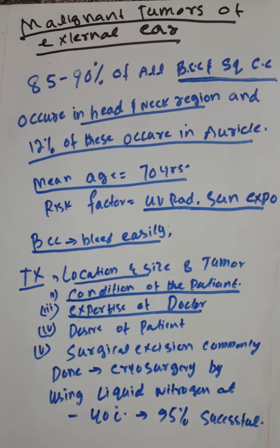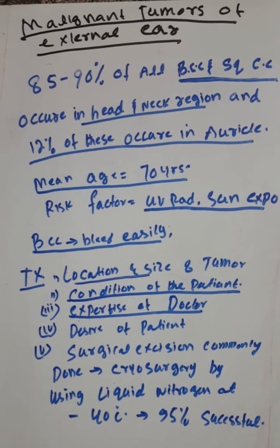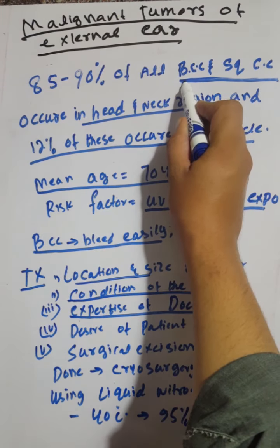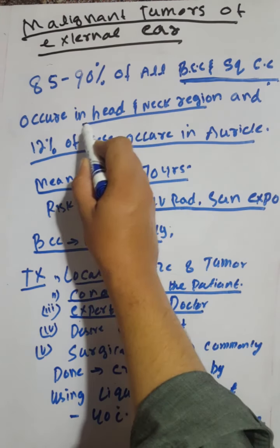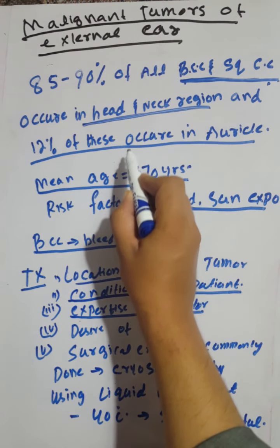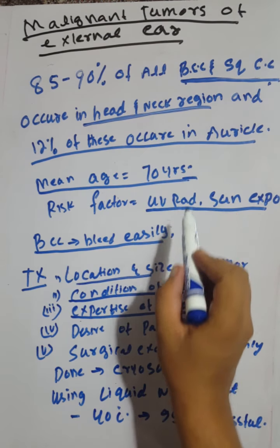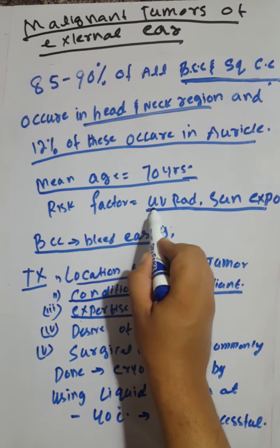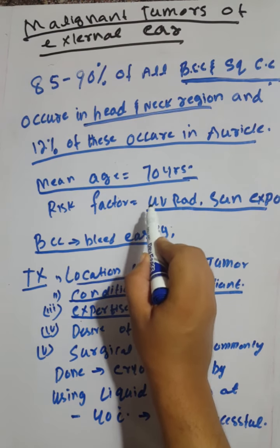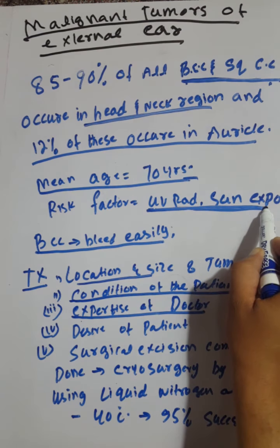We are discussing the malignant tumors of the external ear. The three main types are basal cell carcinoma, squamous cell carcinoma, and melanoma. Basal cell carcinoma and squamous cell carcinoma are the most common. 85% to 90% of all cases occur in the head and neck regions, and 12% of these occur in the auricle. The mean age for these tumors is 70 years. The main risk factor is ultraviolet radiation and sun exposure.